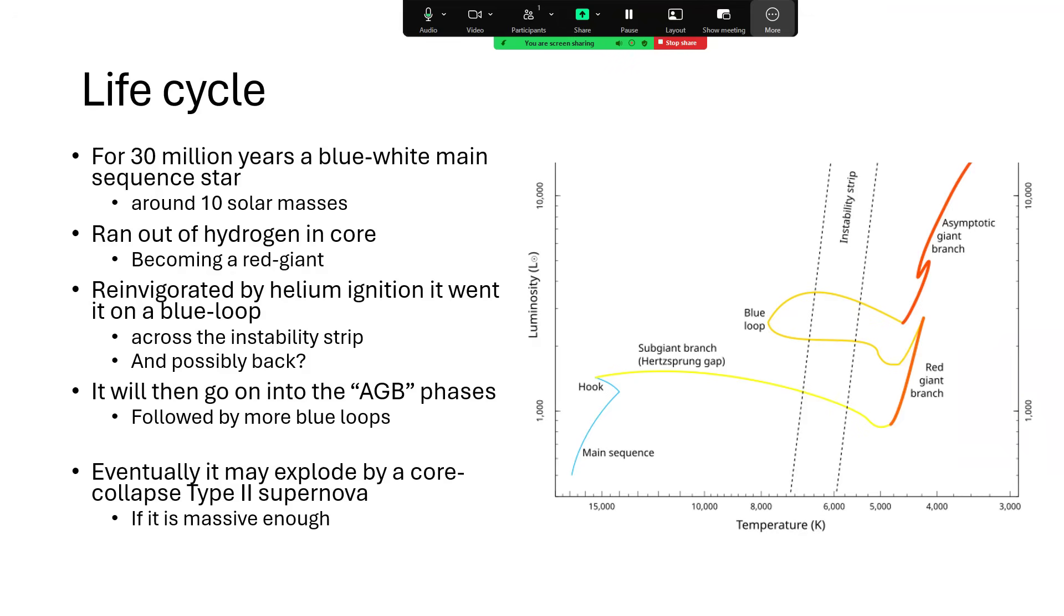It becomes a sub-giant as it's transitioning, and then a full red giant, and gradually progresses up the red giant line, up to the tip of the red giant branch, as is shown there. And when it's at the tip of the red giant branch, it can, if the mass is correct,